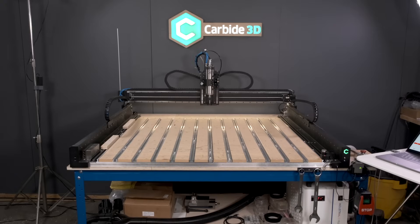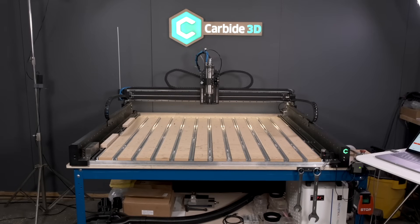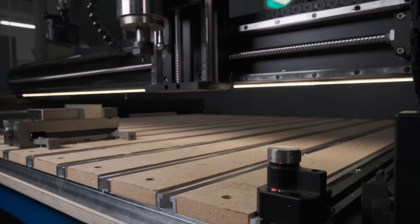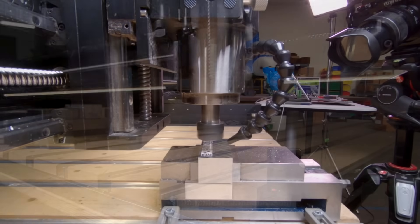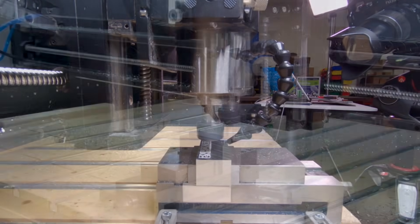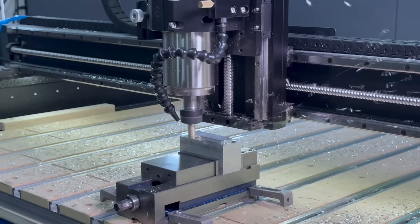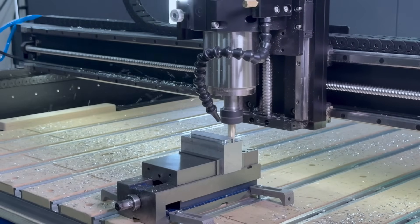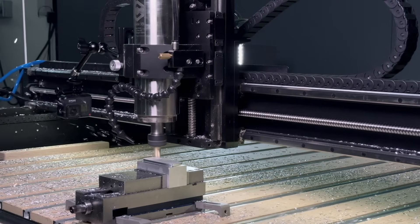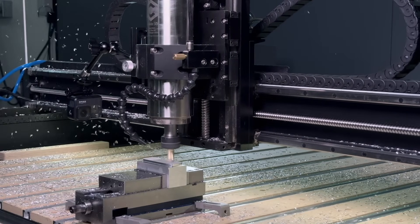I'll be running some tests on the 4x4 foot Shapeoko 5 Pro CNC router we have here in the shop. This is a ball screw driven machine that's meant to be the best balance of versatility, capability, and value offered by Carbide 3D. In a video we published a few weeks ago, we showed a glimpse of the performance of this machine platform by turning a block of aluminum into spicy glitter. But having ample raw power on tap doesn't always translate to finesse.